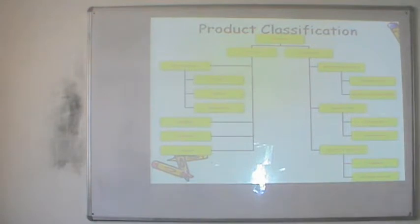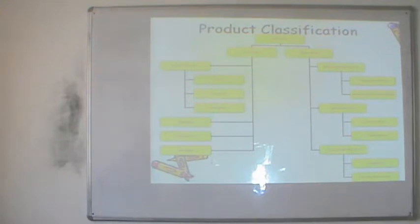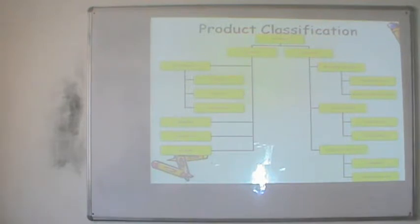All products in the market are not the same — there are various classifications. The first classification is based on who is the actual user. We have consumer goods and industrial goods. If a product is used by an end consumer, it is a consumer good; if used by an industry for further production processes or for resale, it is an industrial good. Industrial goods can be classified into materials and parts, capital items, and supplies and services — including raw material, manufactured material, installation, supplies, and business services.